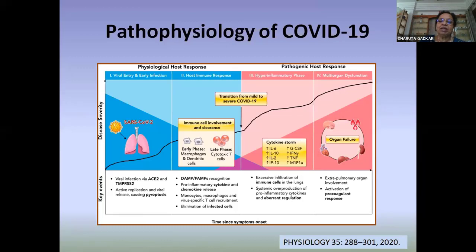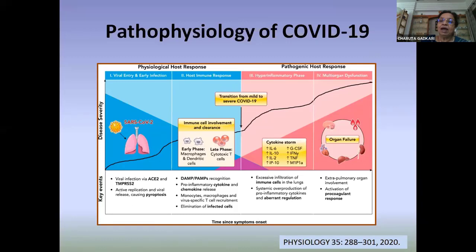In some patients, the disease will progress to a severe stage due to dysregulation of the immune response. There is systemic overproduction of pro-inflammatory cytokines and aberrant regulation, leading to excessive infiltration of immune cells in the lungs. These patients can progress to multi-organ failure with extra-pulmonary organ involvement and activation of a pro-coagulant response.